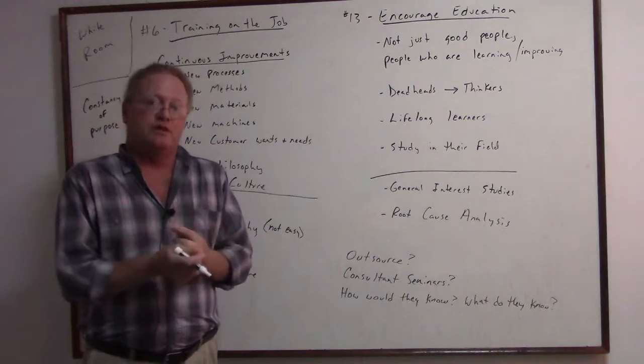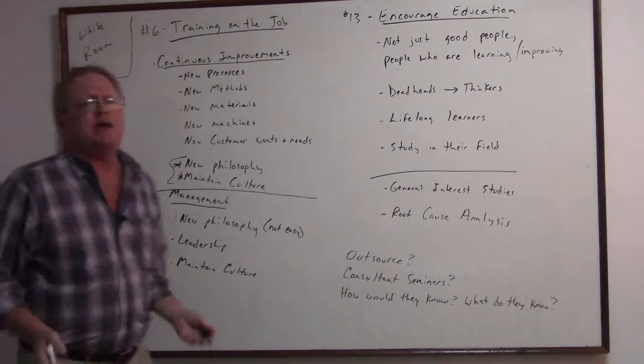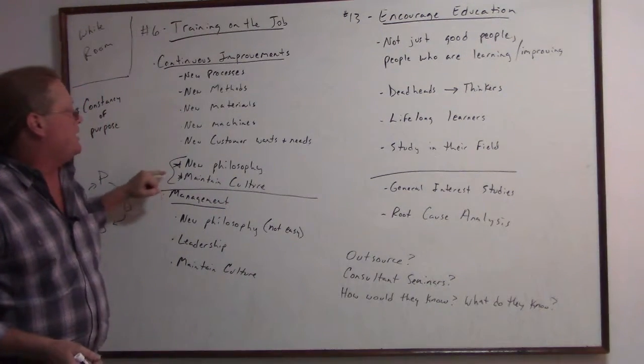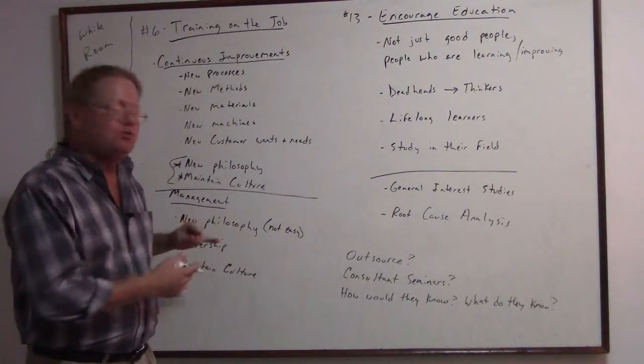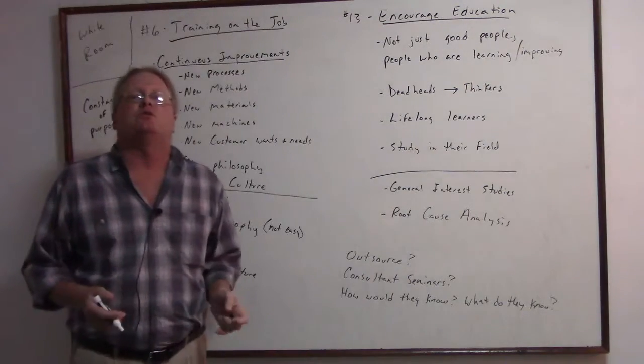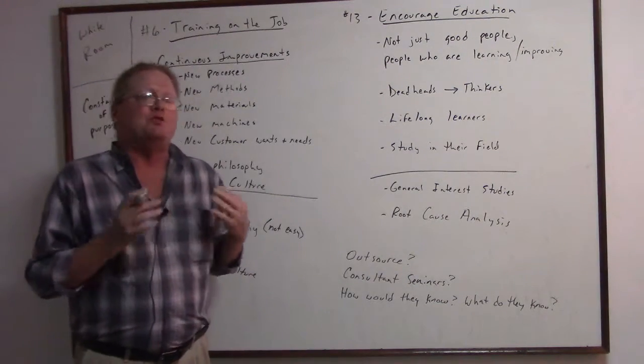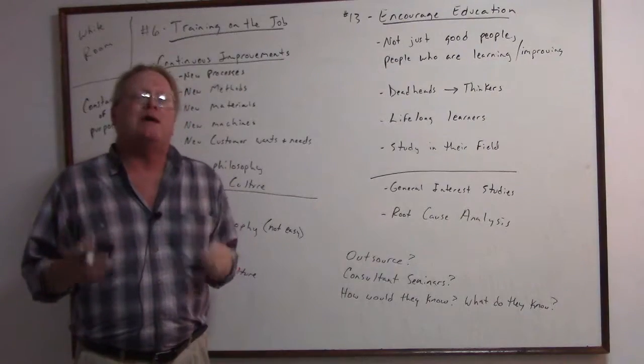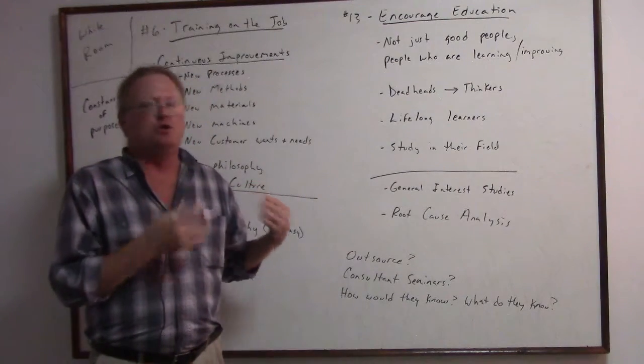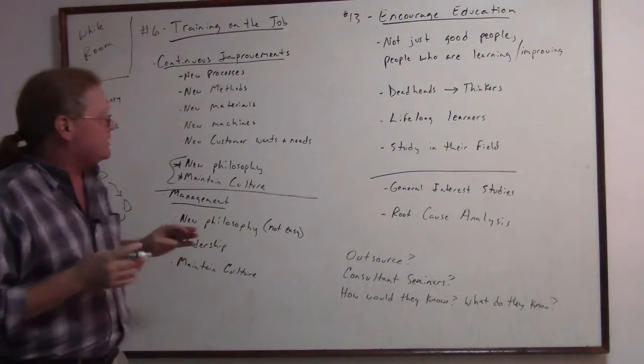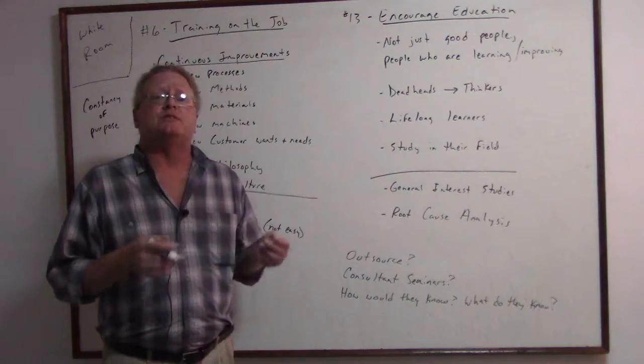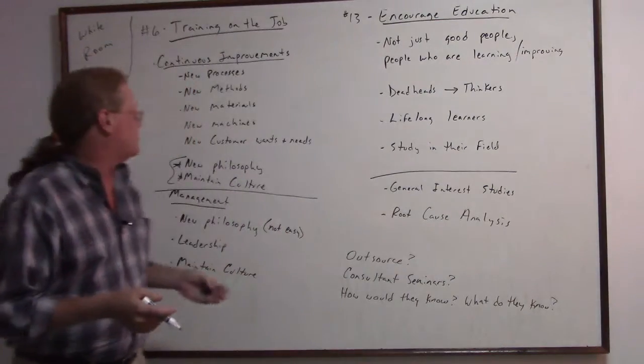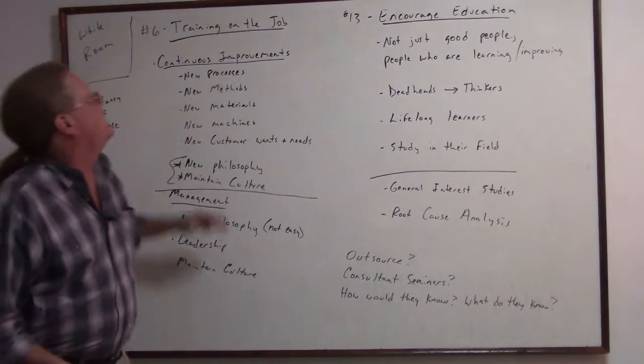So there is no instant pudding, as Deming says. We want to move towards the new philosophy and move towards the constancy of purpose, including the employee, the customer, and continuous improvement. This doesn't happen overnight. We have to get people on board and get them to understand the new philosophy. We need to maintain the culture of quality. If you don't maintain that, if you don't keep the training going, then the culture will likely slip back.